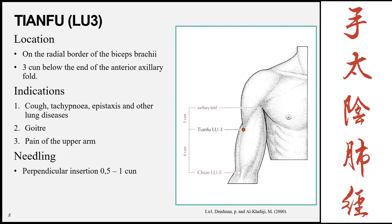The next point is Tianfu, Lung 3, located on the radial border of the biceps brachii, 3 Cun below the end of the anterior axillary crease. From the anterior axillary line to the cubital crease is 9 Cun, so this point is one third of the way down. Indications include cough, tachypnea, epistaxis, other lung diseases, goiter, and pain of the upper arm due to its local position. Needling is a perpendicular insertion, 0.5 to 1 Cun.